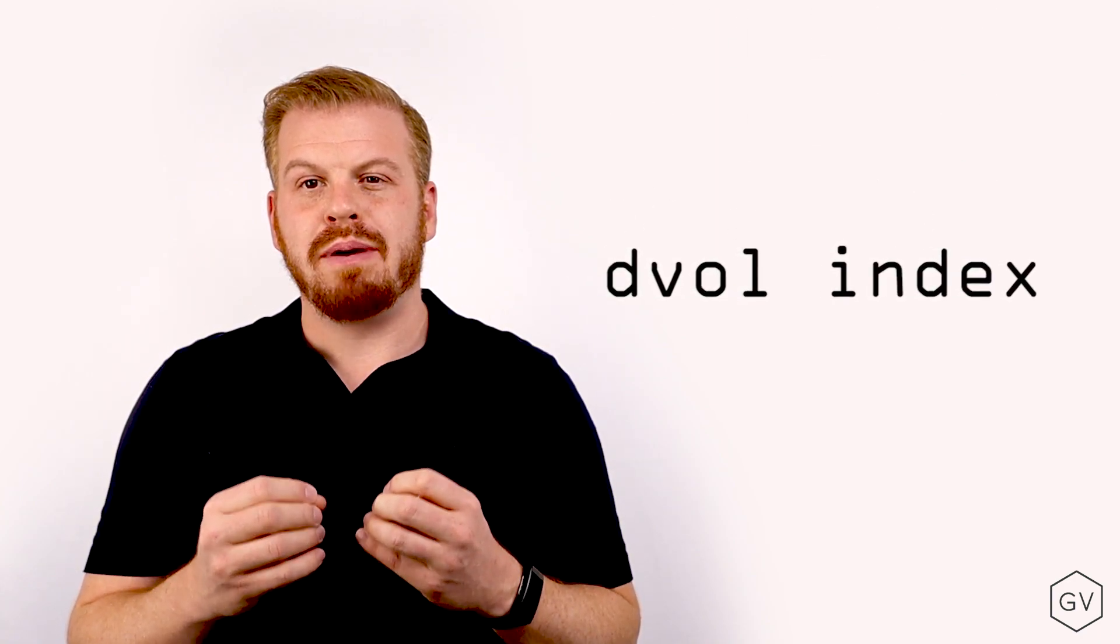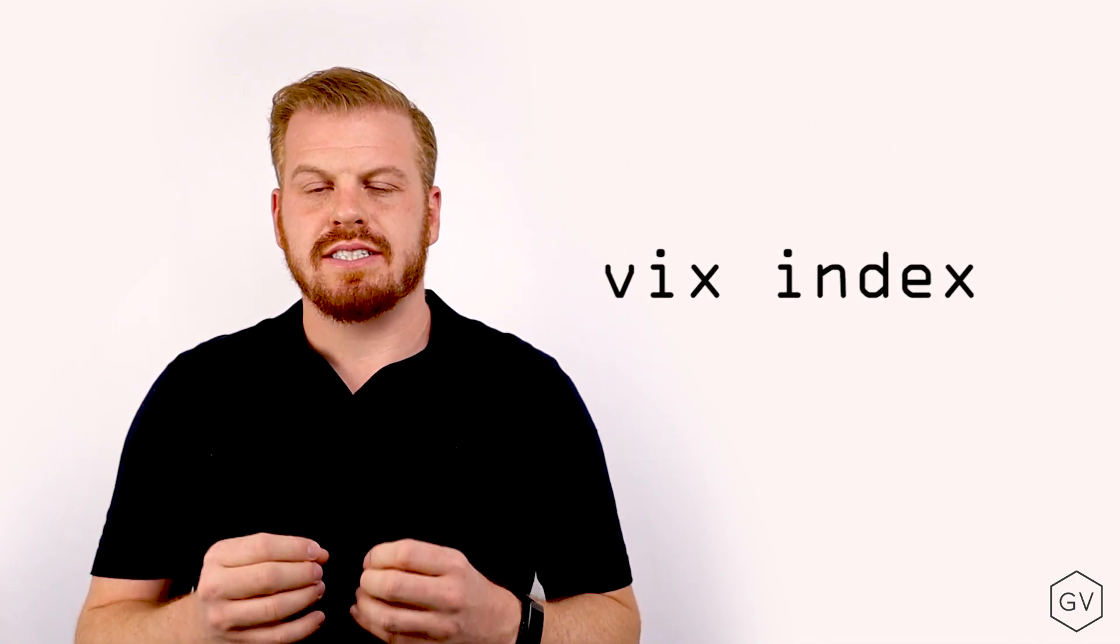More specifically, we'll talk about Deribit's DVOL index, which is a Bitcoin implied volatility index, and we'll make comparisons to the VIX index, which is an SPX or S&P 500 implied volatility index.